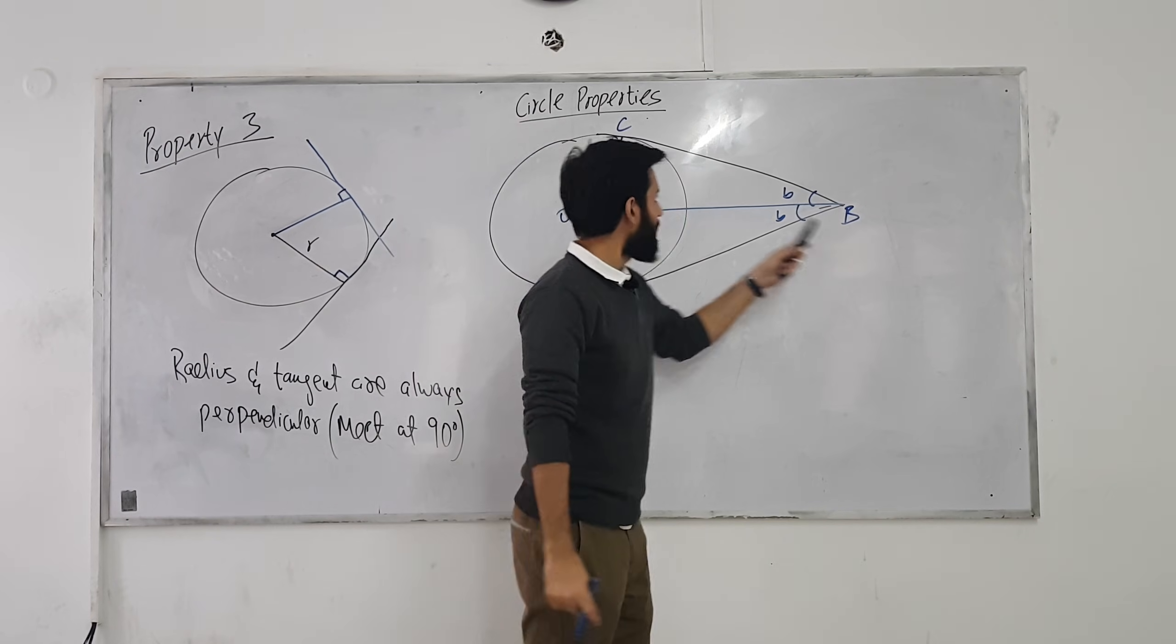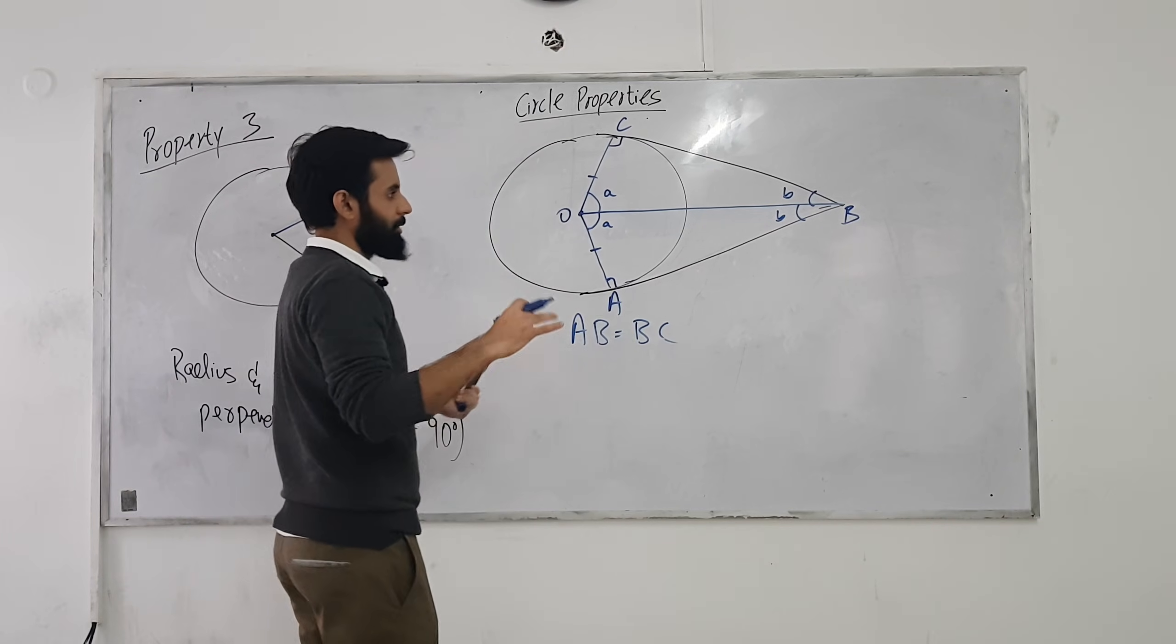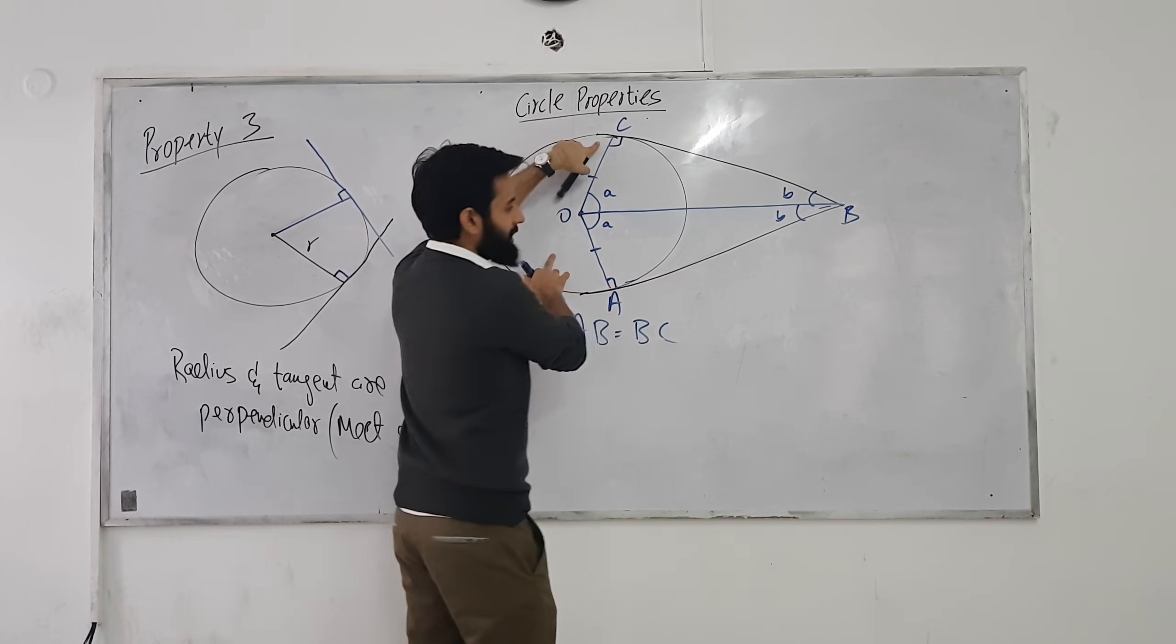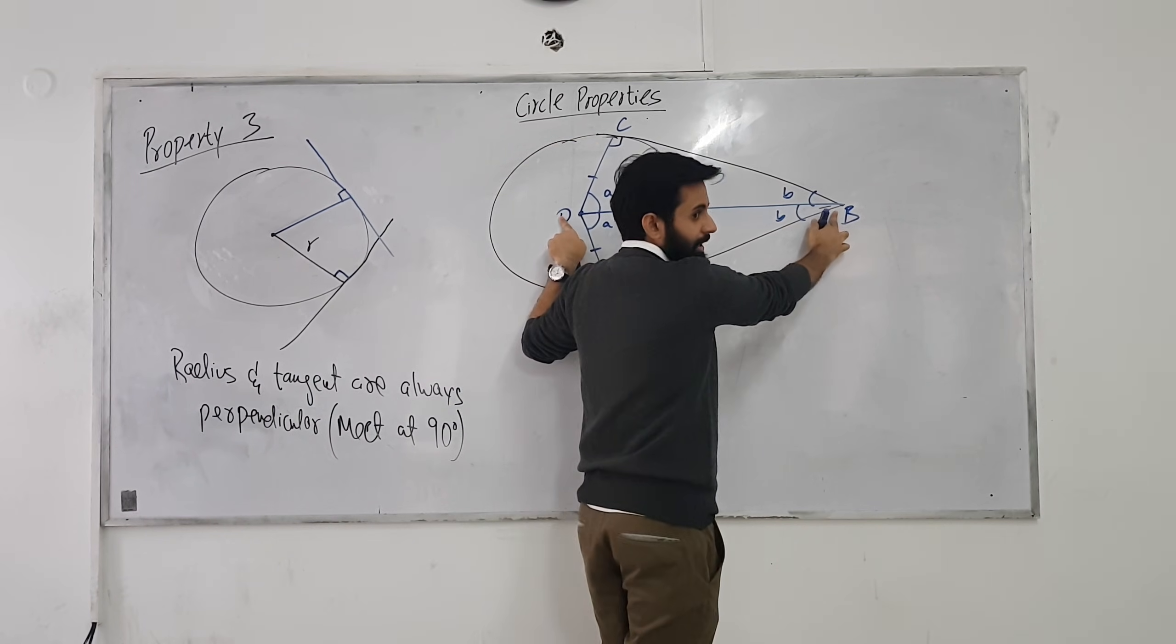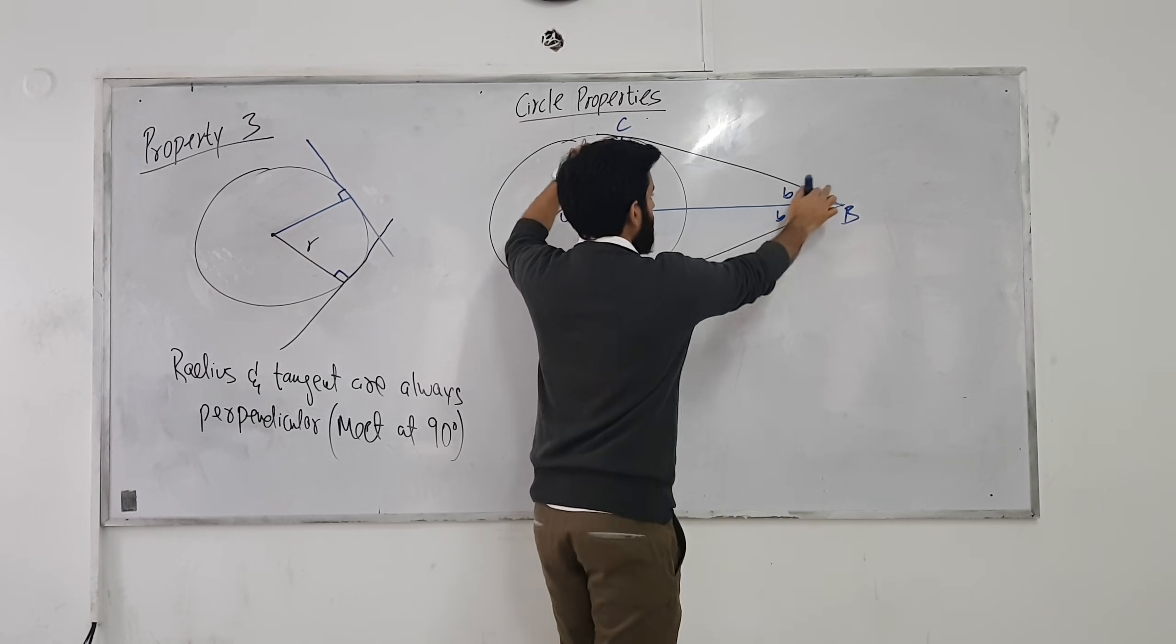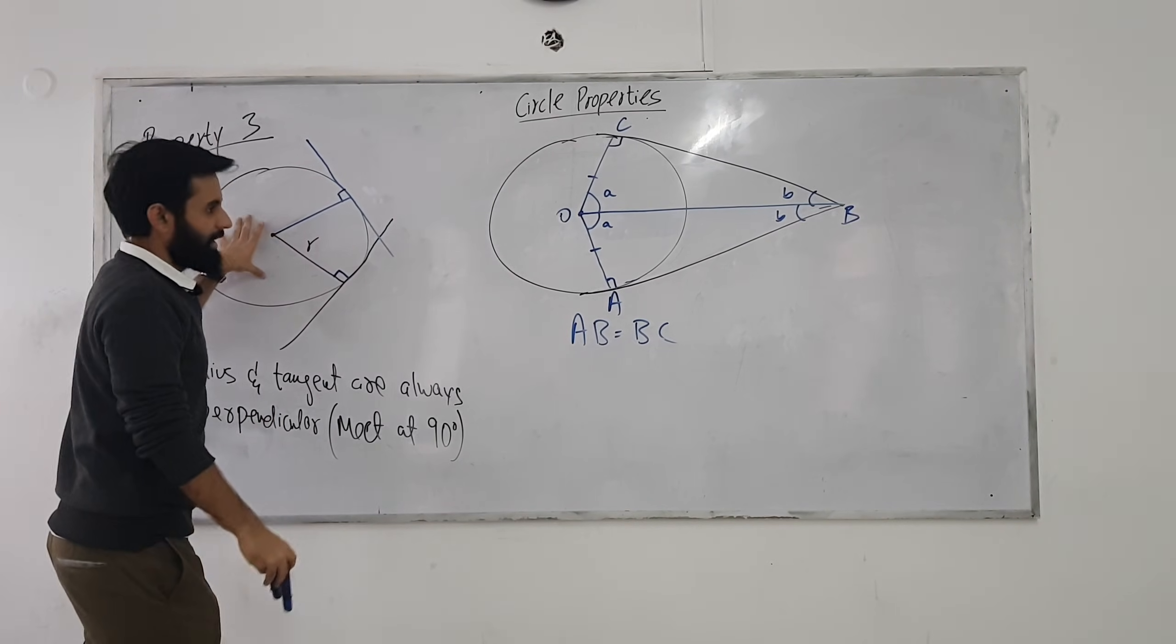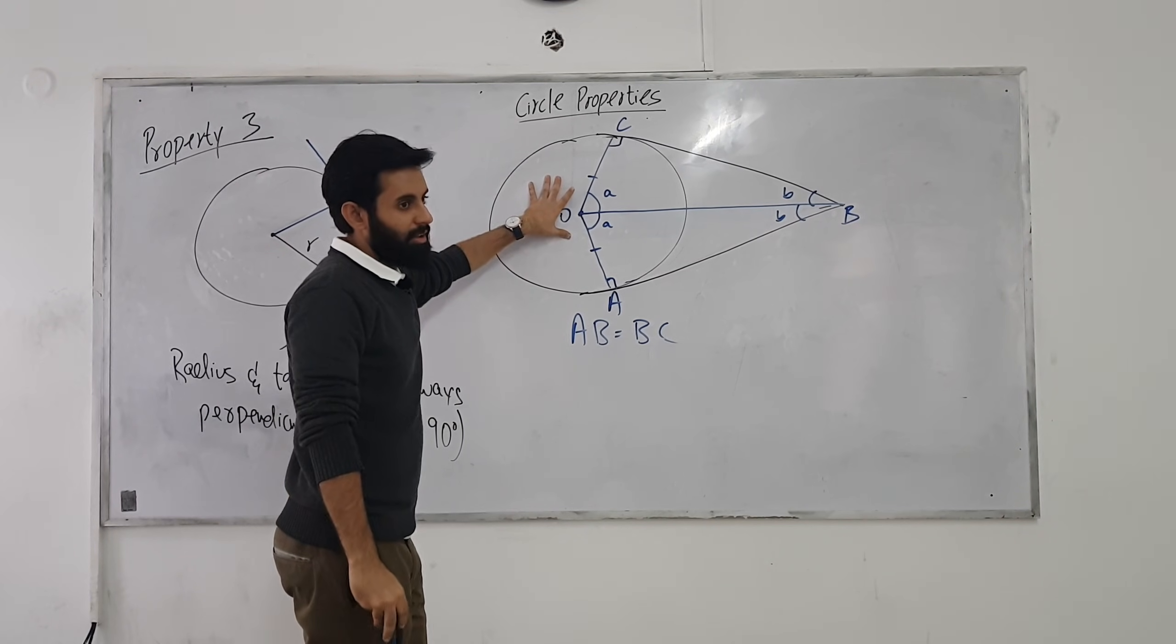What do you call congruent triangles? Exactly same in shape and size. So triangle OAB and triangle OCB are congruent. And why are they congruent? OA and OC will be the same in length because these are both radii. OB is a shared length. So if two lengths are the same, the third length will also be the same, AB and CB. Pretty simple. This property is that when two tangents meet at an external point, they're equal in length.